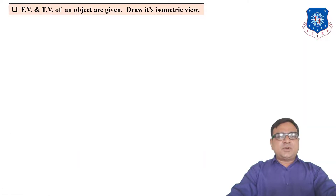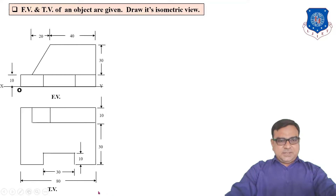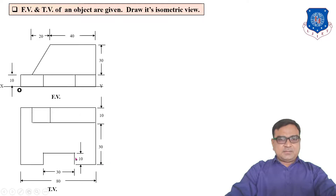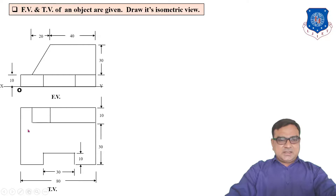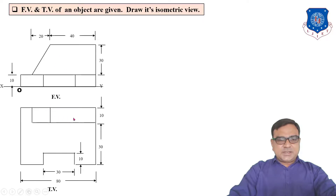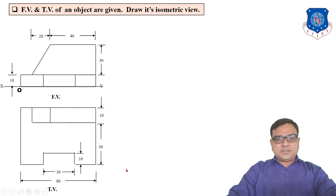Next example: the front view and top view of an object are given — draw its isometric view. These orthographic projections are in first angle projection method. The overall dimensions are: length 80 mm, width 40 mm, and height 40 mm. This is the base — front view of base and top view of base. This is the front view of the plate or block and its top view is shown here. There is one slot visible in the top view and its front view is shown here.